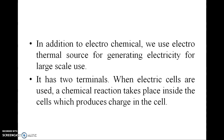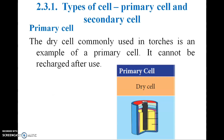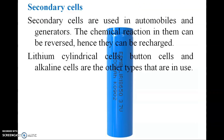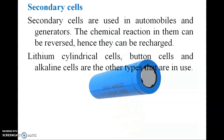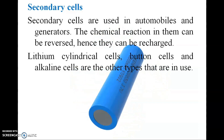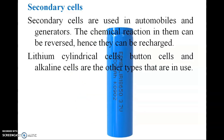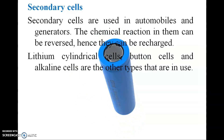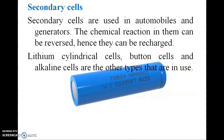An electric cell has two terminals. When electric cells are used, a chemical reaction takes place inside the cell which produces charges. There are two types of cells: primary cells, such as dry cells commonly used in torches, and secondary cells, which are rechargeable — such as lithium cylindrical cells or alkaline cells used in mobile phones.